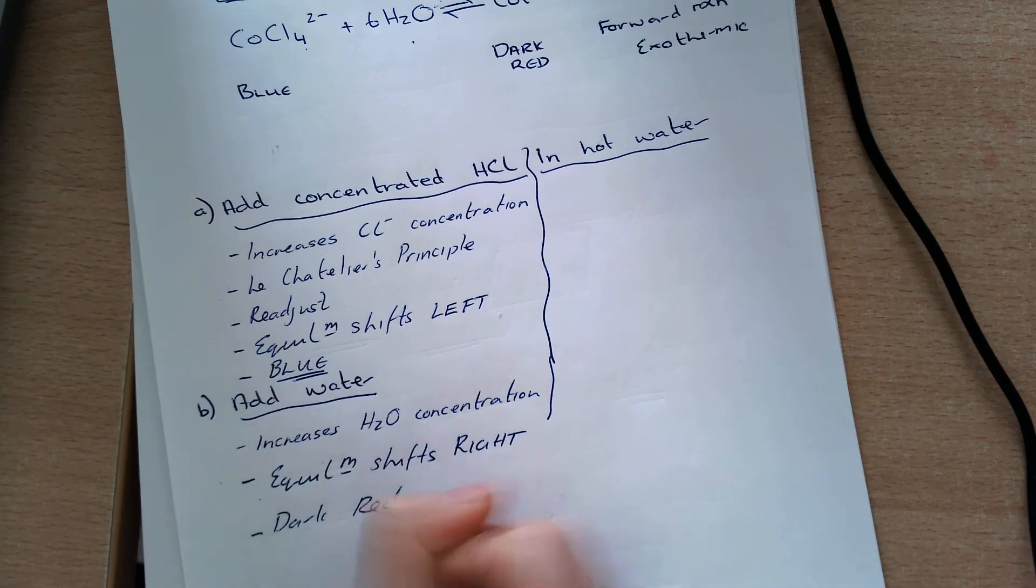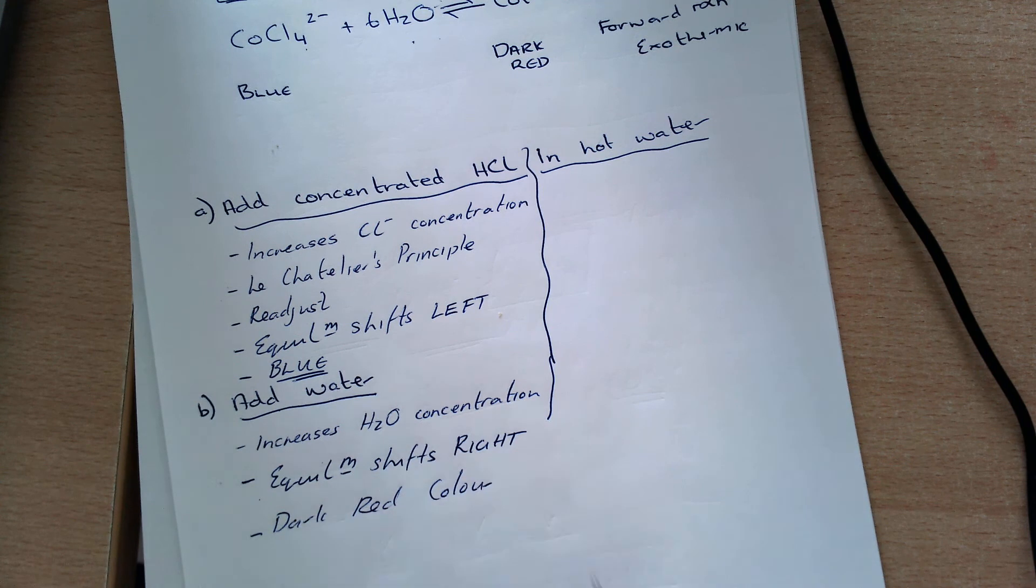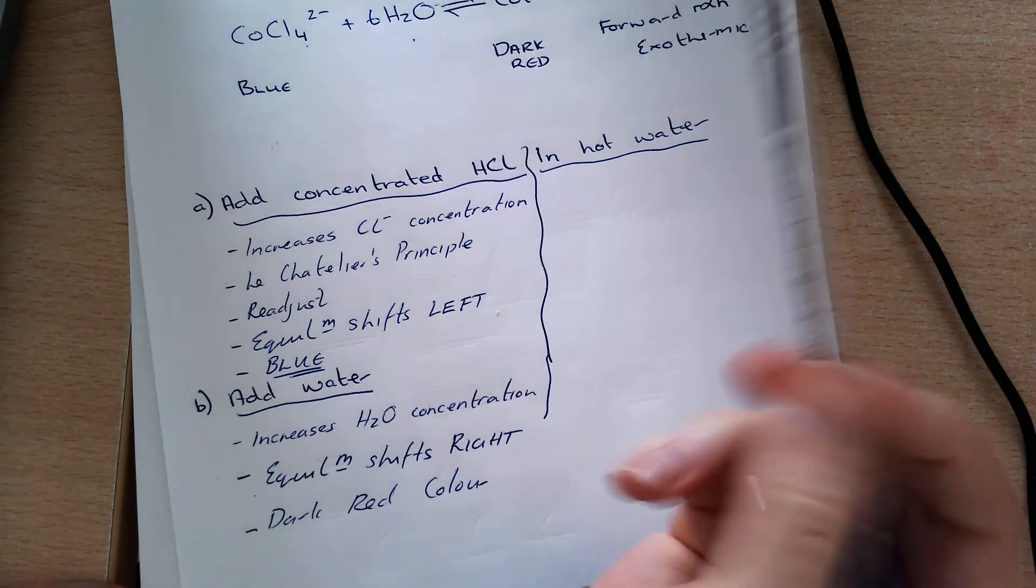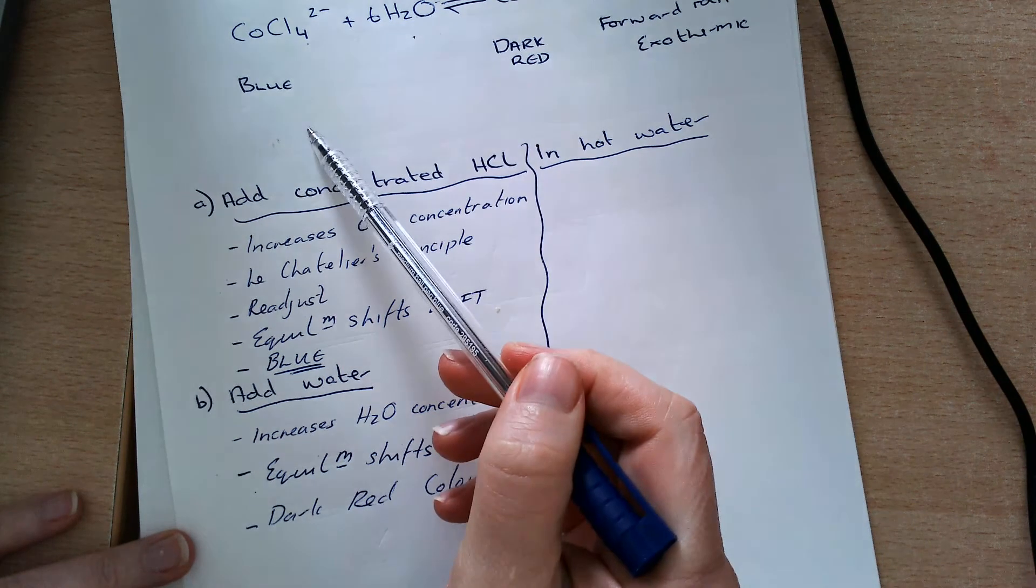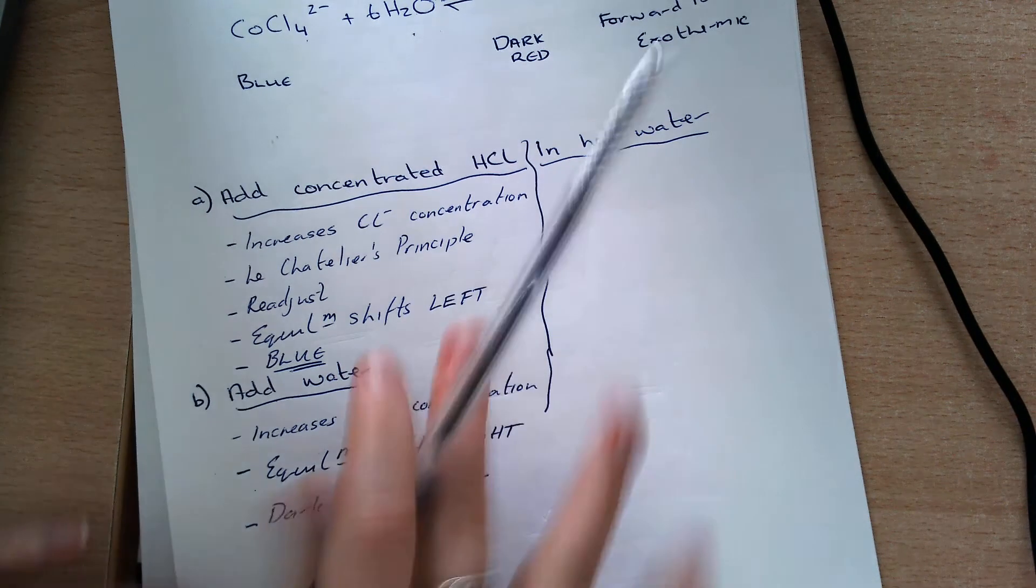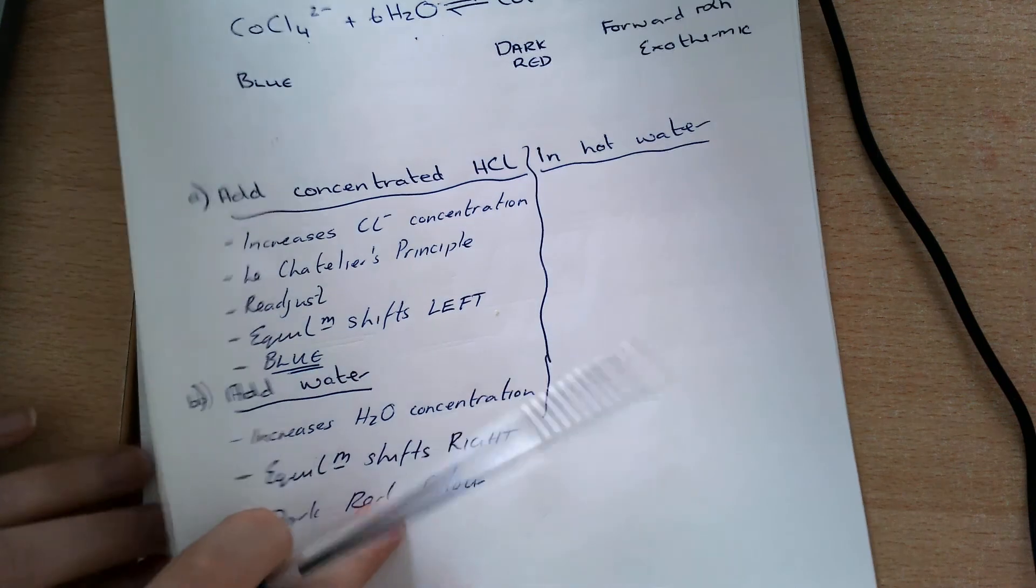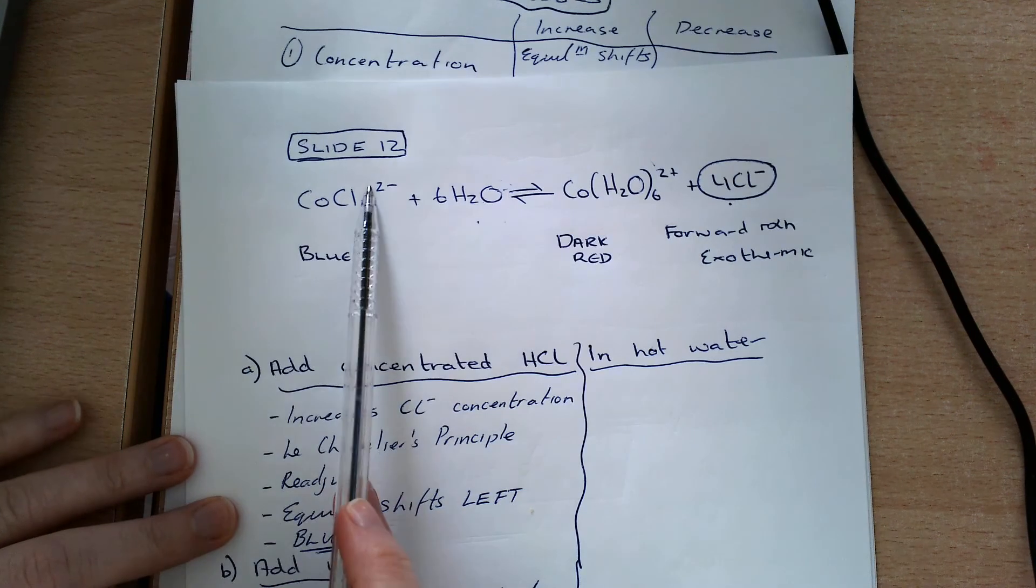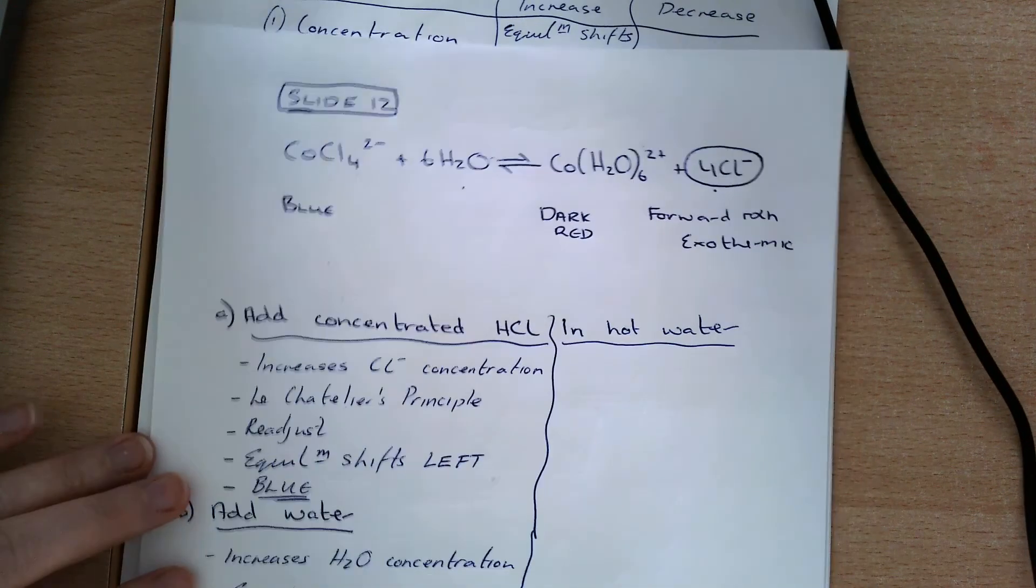Now, you could also be asked, how could you reverse this so that the blue color is restored? And I could just as easily remove water. Remember, if I remove water, my equilibrium, when concentration decreases, shifts to the same side. So if I'm removing the water on my left-hand side, the equilibrium is going to shift to the left-hand side.